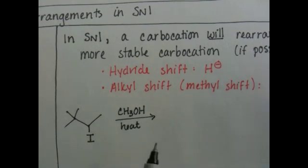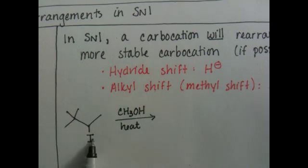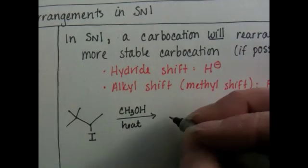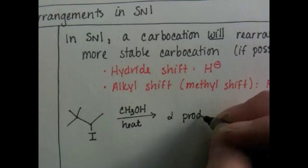Now at first, you might just predict popping off the iodide and putting on in its place a methoxide, OCH3. But you actually get two products in this reaction.